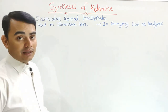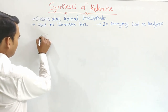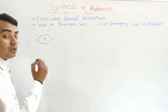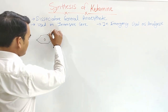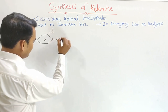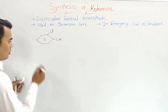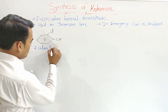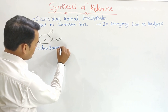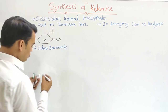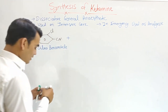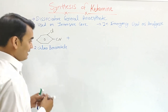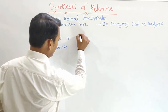Now let's discuss the synthesis of ketamine. The synthesis of ketamine is started from 2-chlorobenzonitrile — this has a chlorine and a CN group. This 2-chlorobenzonitrile is reacted with cyclopentyl magnesium bromide.